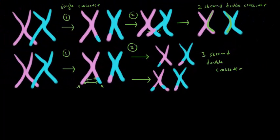It's called a three-strand double crossover because three chromatids were involved — three strands. Let's highlight them: this strand, that strand, and that strand. And again, it's a double crossover because crossing over happened twice.